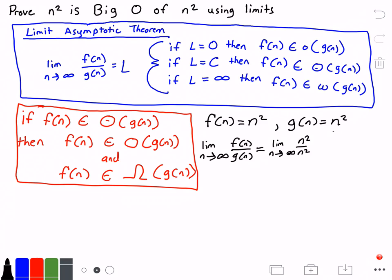If we simplify this, we get the limit as N approaches infinity of 1. Now I'm going to continue down here. This equals just 1. The limit as N approaches infinity of 1 is just 1, and I'm going to rewrite that to make it look a little better.